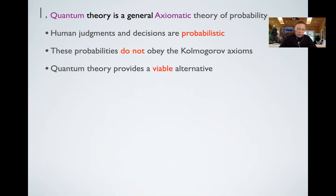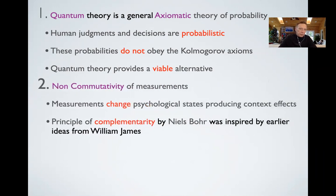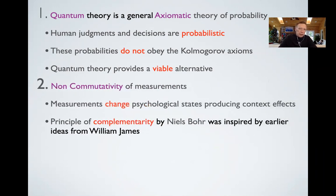There are other generalized probability theories we could pick besides quantum. Probably quantum is the closest one to classical Kolmogorov. But one of the main reasons we pick quantum is that quantum probability was developed in physics because the measurements they had to work with were non-commutative. If you measured a particle, you change the particle, and that changed the next measurement. This non-commutativity was an important part in physics — and that's also true in psychology. When you measure a person, you change the person.